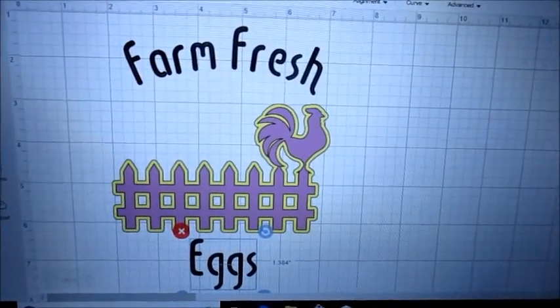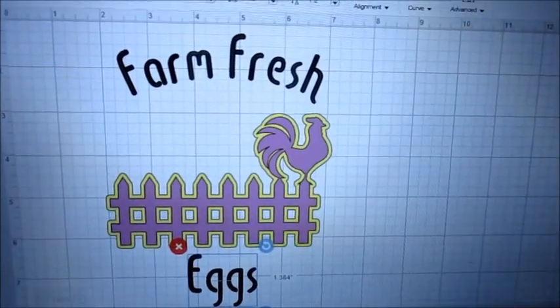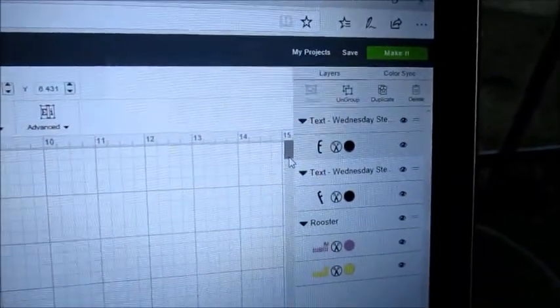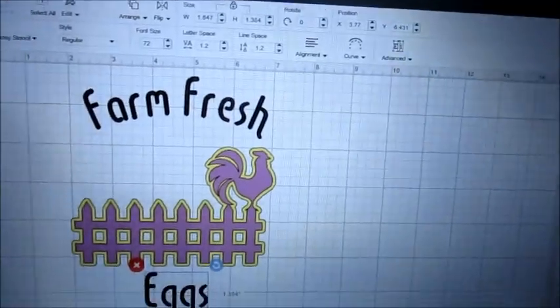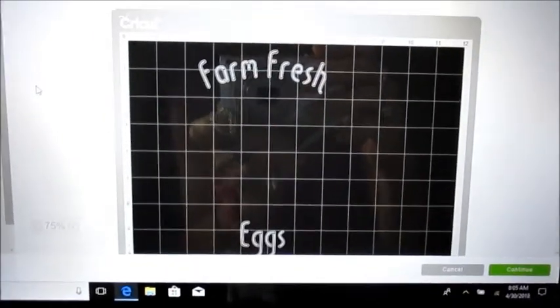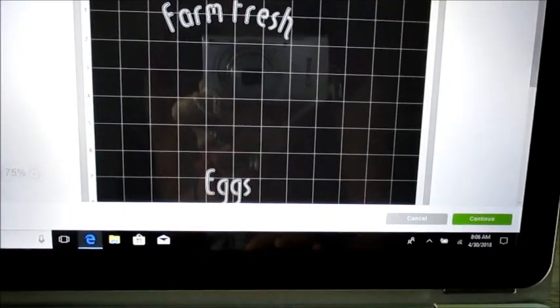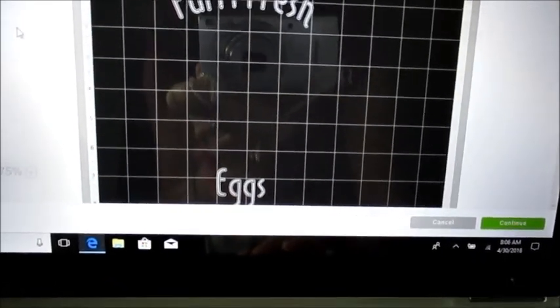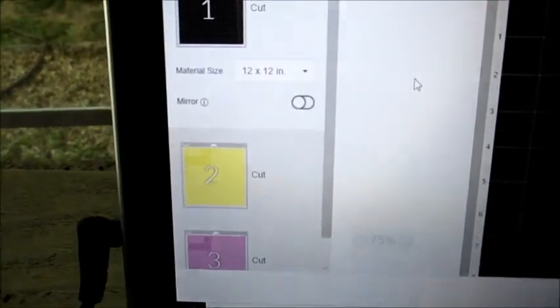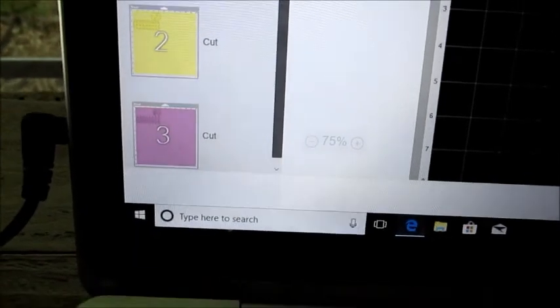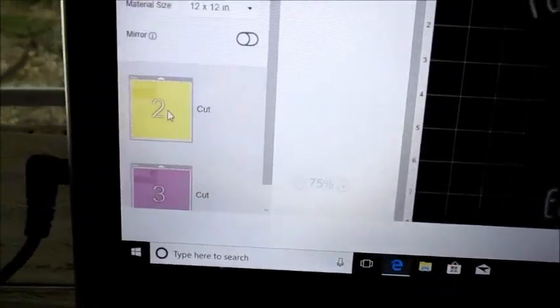Now you can see where I've added the word eggs. And then I'm going to go to make it. And this is where it gets a little tricky. This is one of the things I don't like about the Design Space. It's going to put my mats, three different mats it wants to do, and I don't want to do it that way.